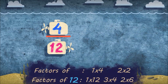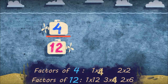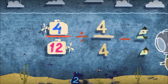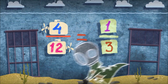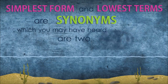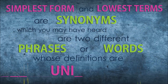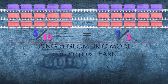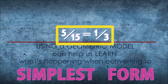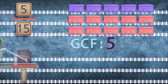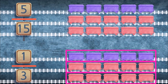To convert to the simplest form, we gotta find the greatest common factor, then take that numerator and denominator and divide them by that common factor. Simplest form and lowest terms are synonyms — two different phrases with uniform definitions. Using a geometric model can help us learn what's happening when converting. A rectangle shows five-fifteenths; the GCF is five, which means no greater number can divide both fifteen and five. So divide both by five to get one-third in lowest terms.